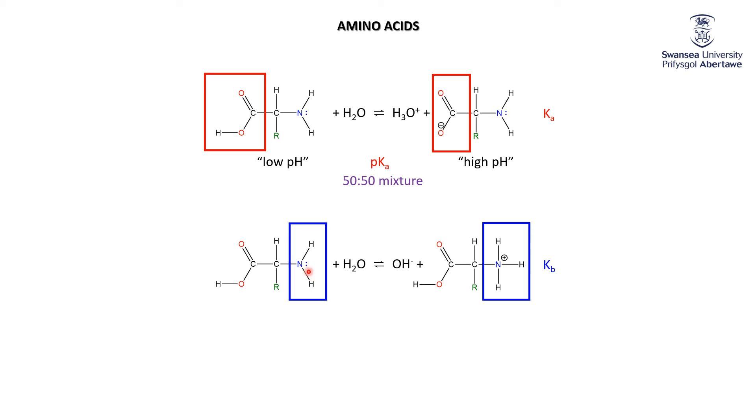Again, let's think about different pH situations. At very high pH, we have a lot of OH⁻. The equilibrium is driven toward the left, toward the basic form. So at high pH, we have the basic form. At low pH, we don't have much OH⁻, so the equilibrium lies to the right to compensate. At low pH, we have more of the conjugate acid.